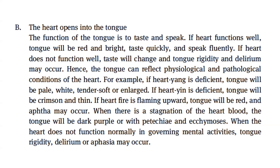For example, if heart yang is deficient, the tongue will be pale, white, tender, soft, or enlarged. If heart yin is deficient, the tongue will be crimson and thin. If heart fire is flaming upward, the tongue will be red and aphtha may occur. When there is stagnation of the heart blood, the tongue will be dark purple, or with petechiae and ecchymosis.